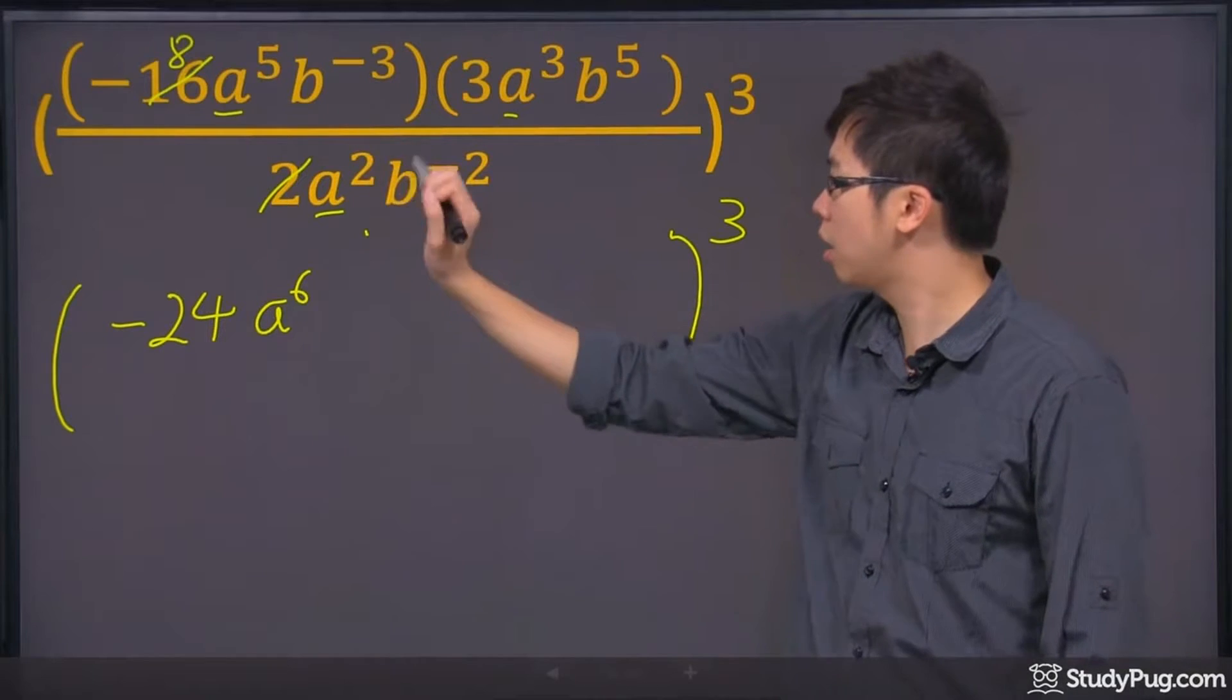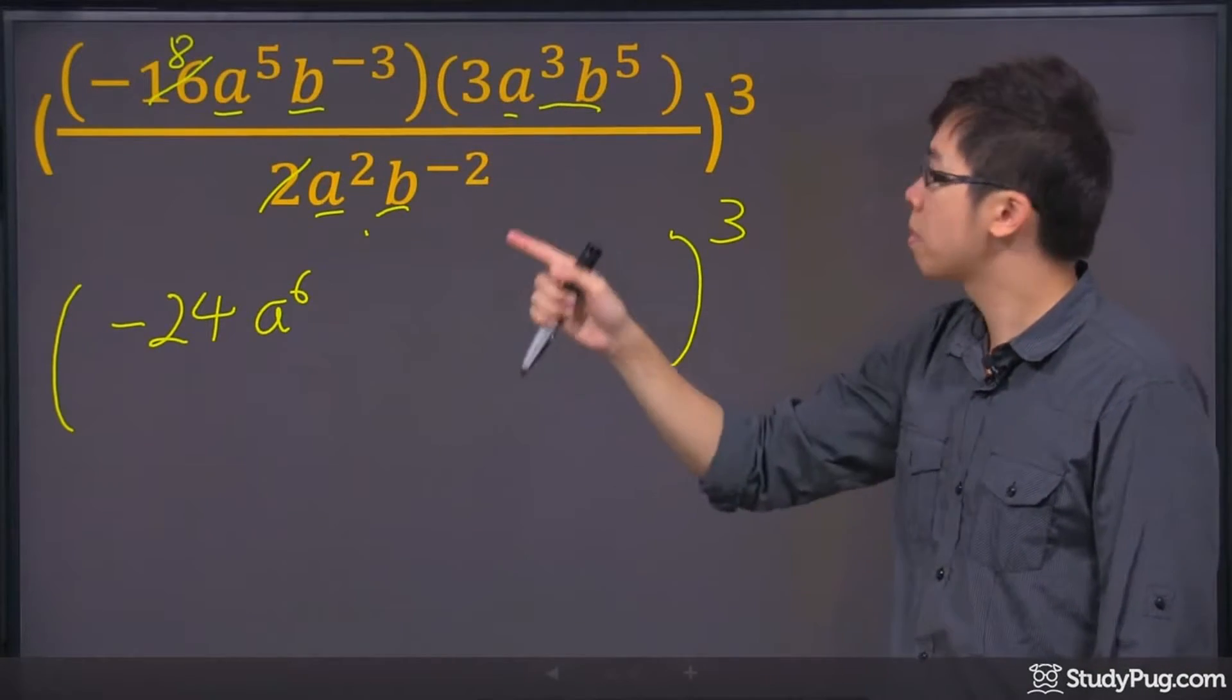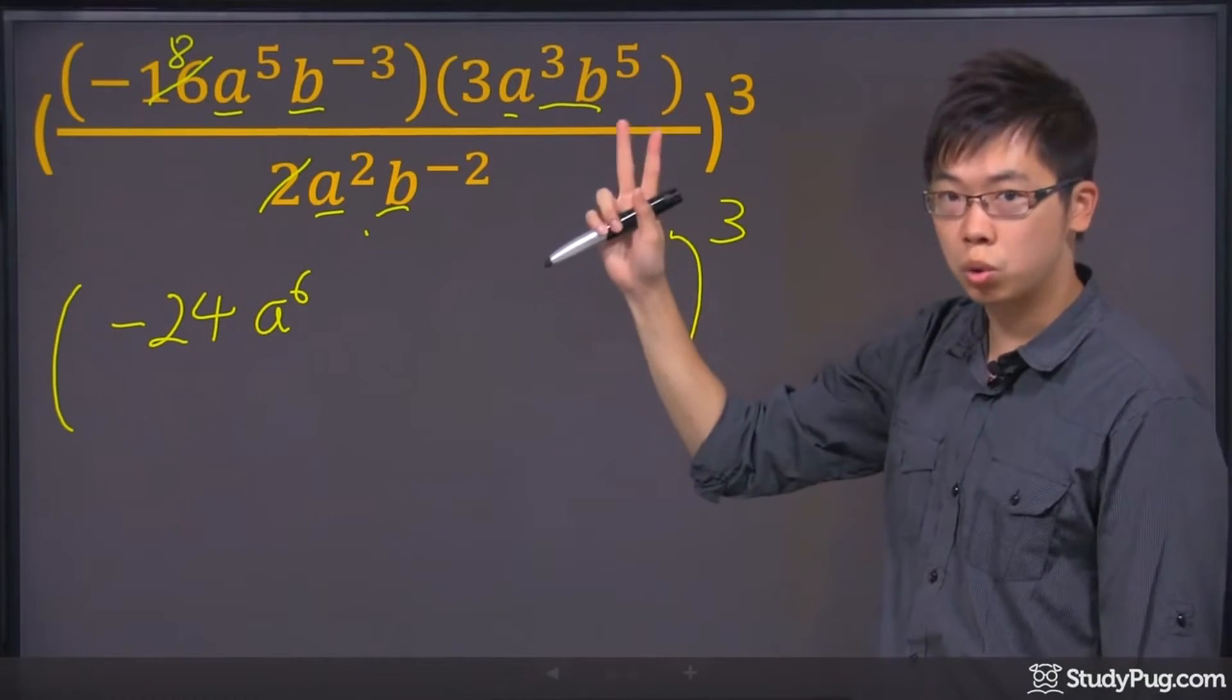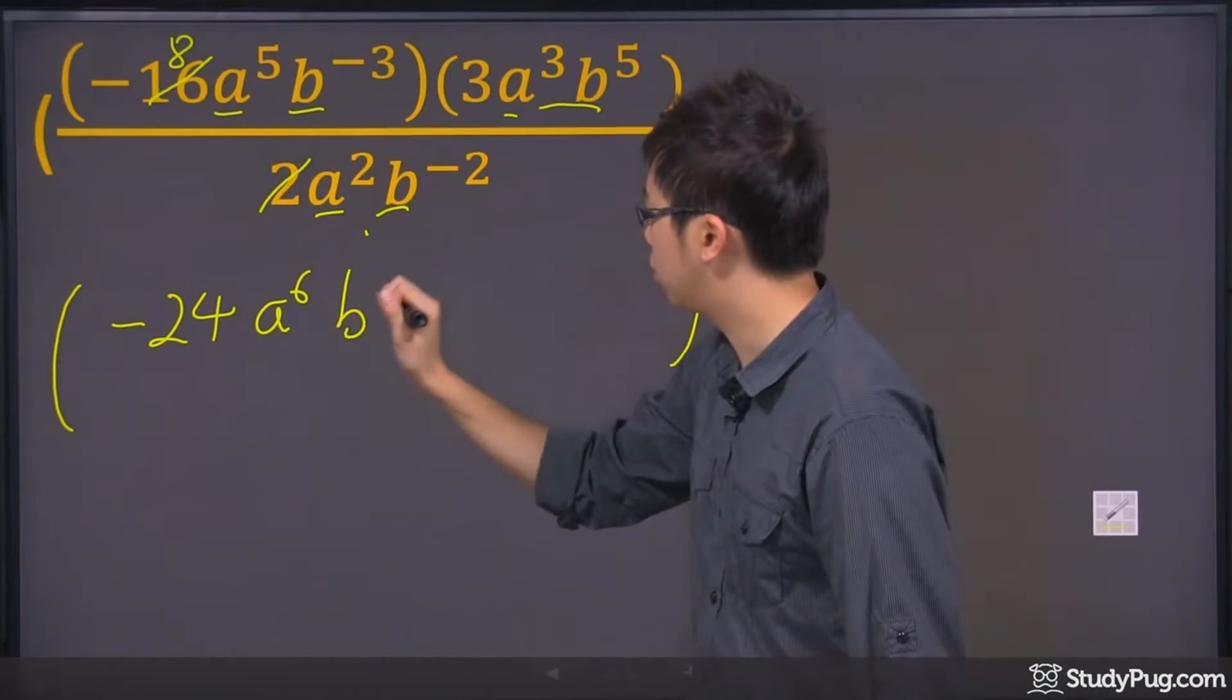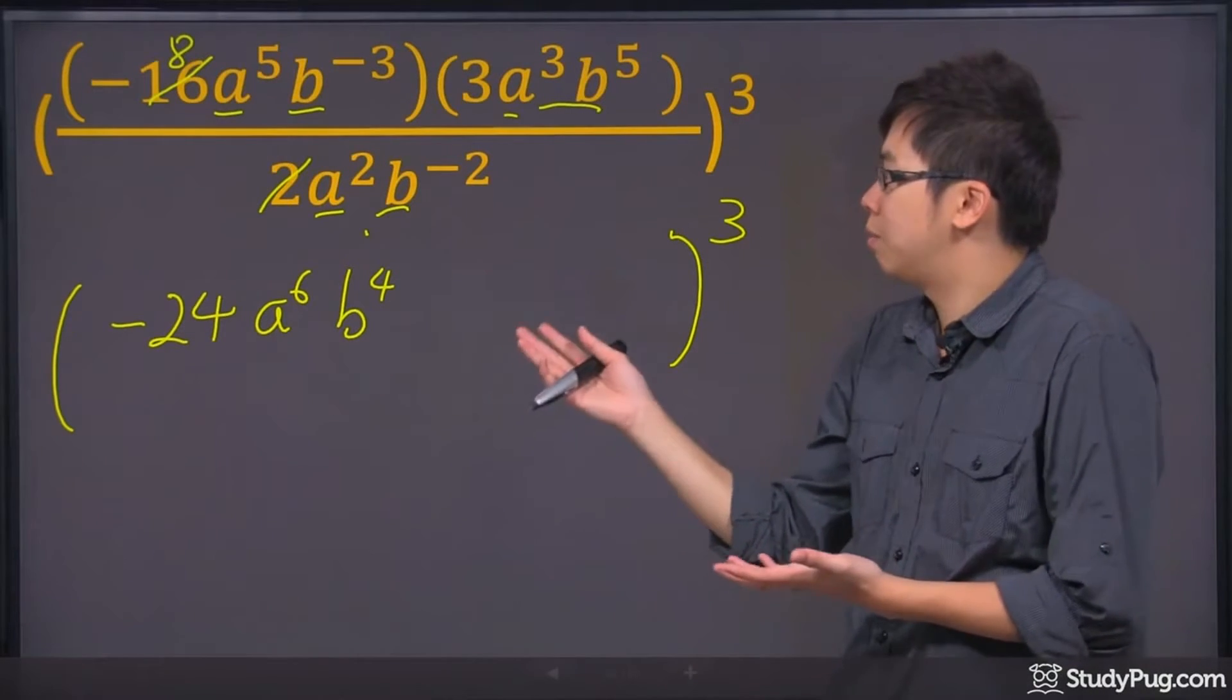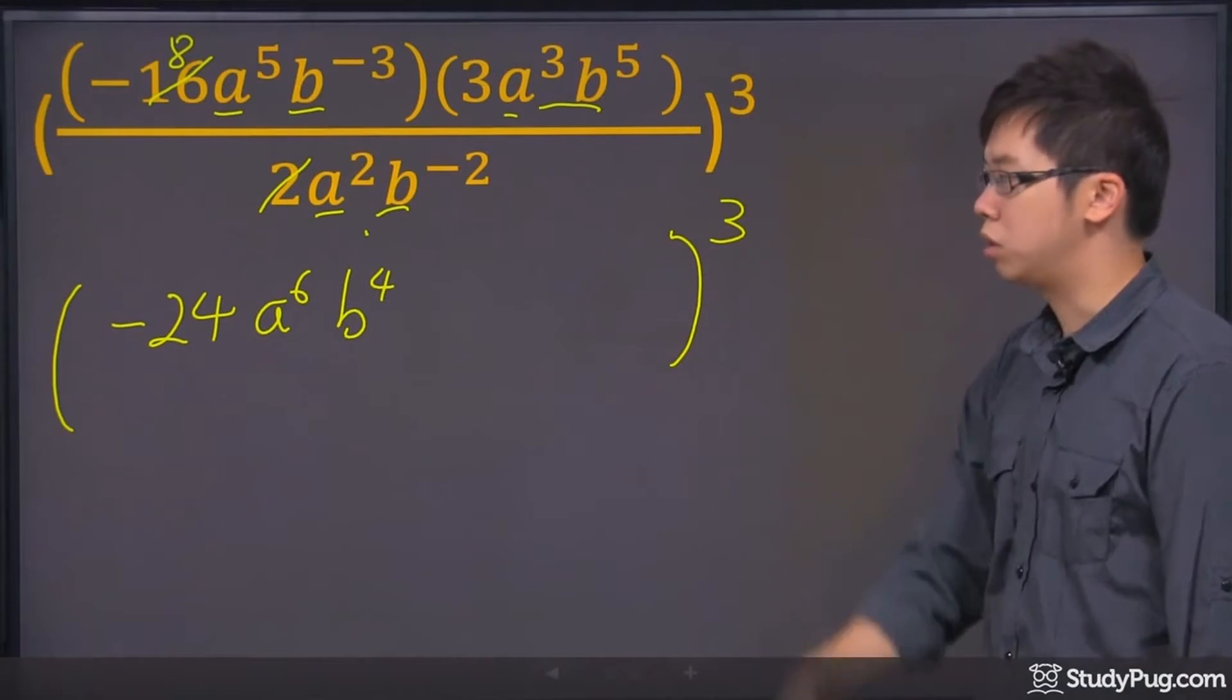Then we've got the B. Again, they have the same base here, here, and here. So negative 3, multiplying. So we're going to do negative 3 plus 5, which is 2, and then 2 minus negative 2, so it's going to give you 4. So we've got B to the power of 4 right here. And that's it. That's basically what happens on the inside here, and we have to raise to the power of 3.